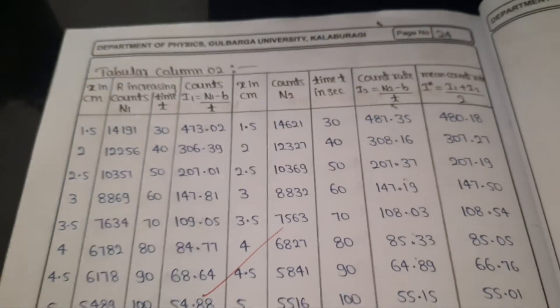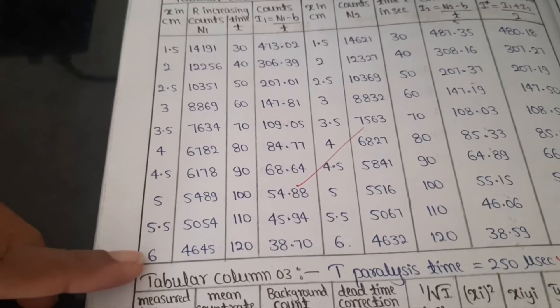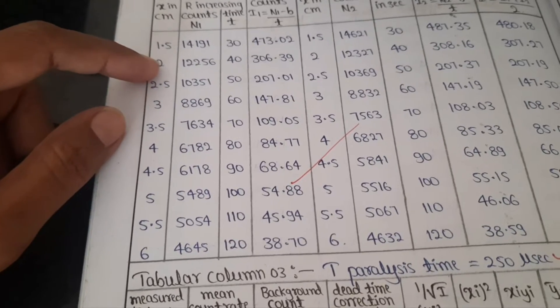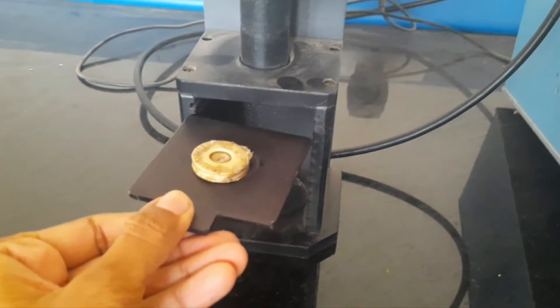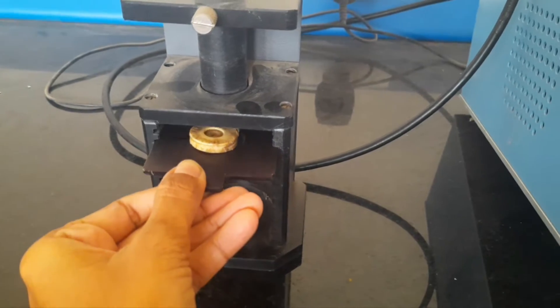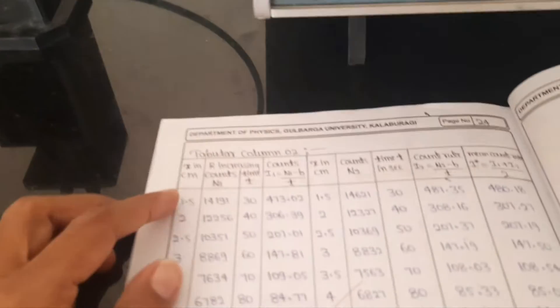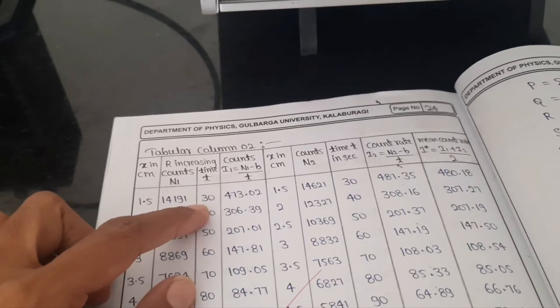In tabular column one, the first column is distance — you can take up to 6 centimeters, starting at 1.5 cm and increasing by 0.5 cm each time. Here I am going to keep the source in the second slot so that the distance from the detector is 1.5 cm.